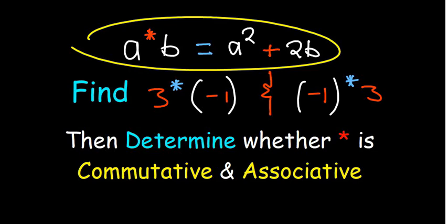Okay, so under binary operations, the operation star is on a and b, where it is equal to a squared plus 2b. So I'll write that: a star b is equal to a squared plus 2b. Now the first part of the question is asking us to define negative 1 star 3.